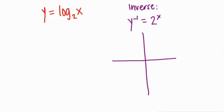Very quickly, y equals 2 to the x has points at (0, 1), (1, 2), (2, 4).